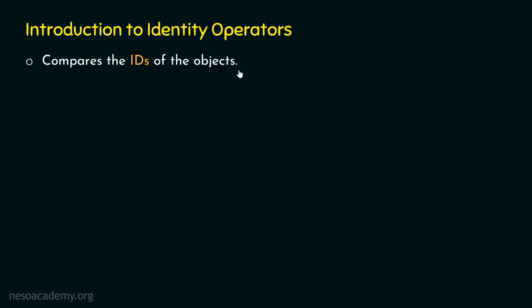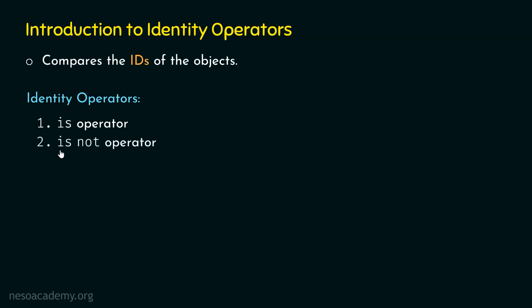We will understand in detail what we mean by ids. For now, we just need to understand that the identity operator only compares the ids of the objects. There are two different types of identity operators available in Python. The first operator is the 'is' operator, and the second operator is the 'is not' operator.